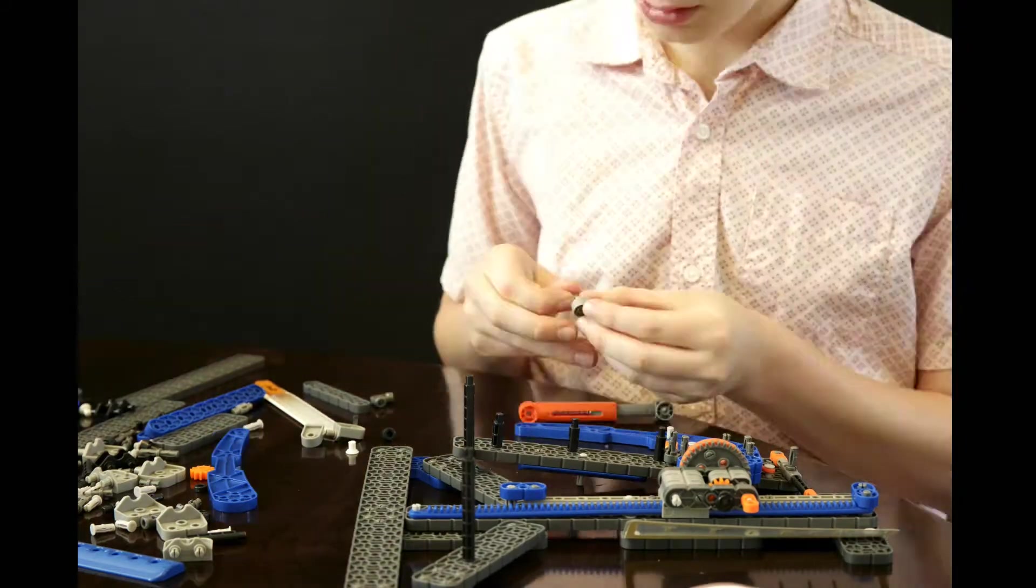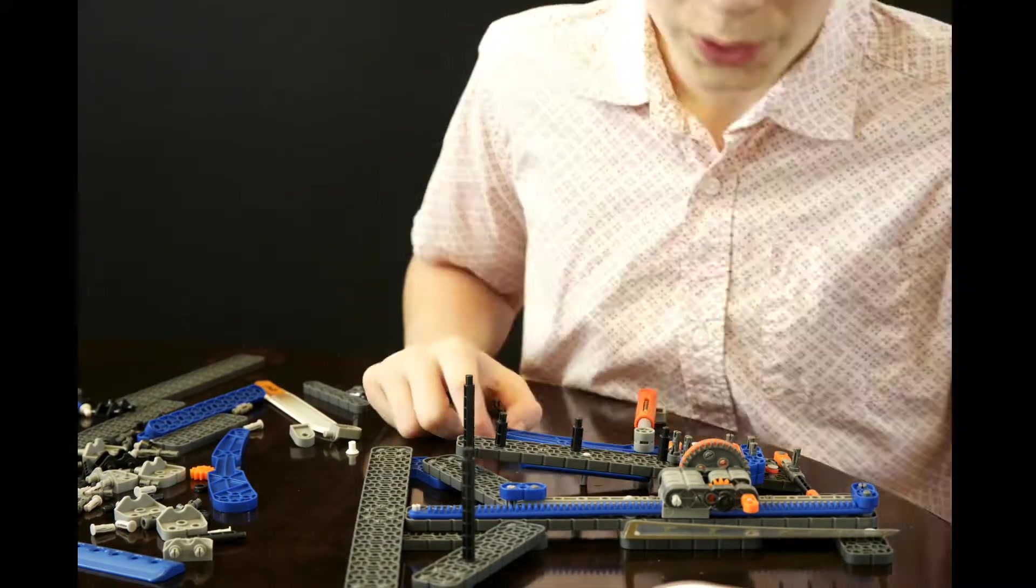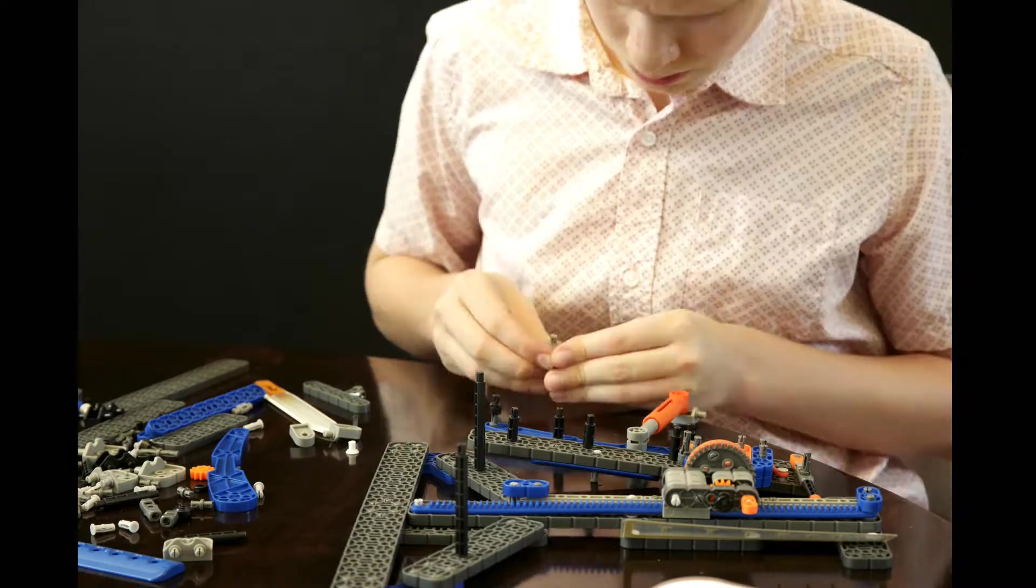There's a thing on the side of the crossbow where it shows you all the different angles. It's 25, 30, 35, 40, 45 and 50 degrees.